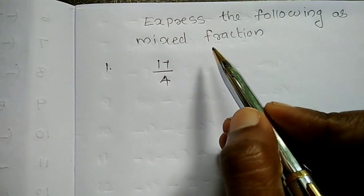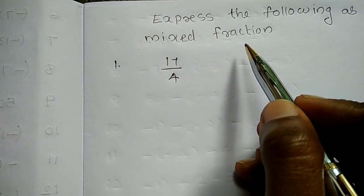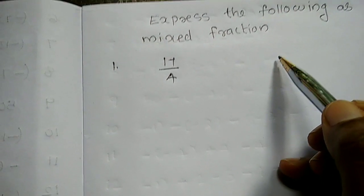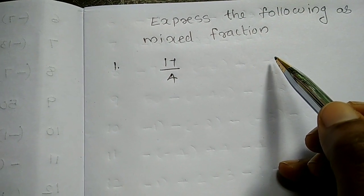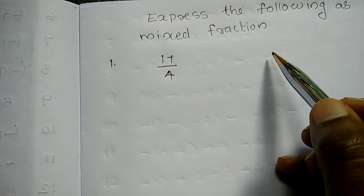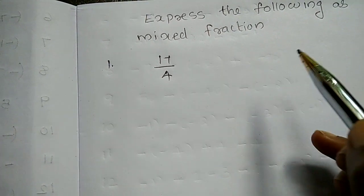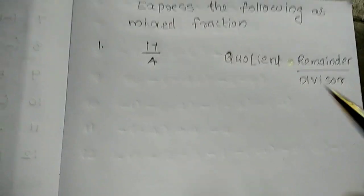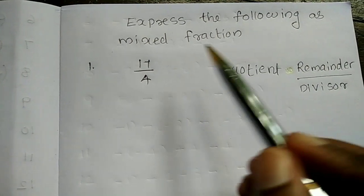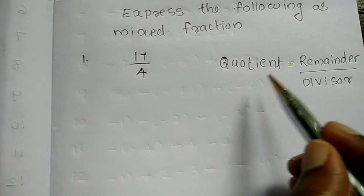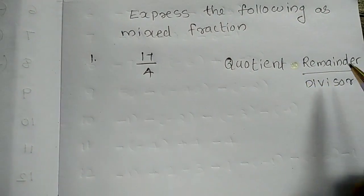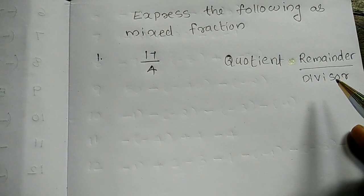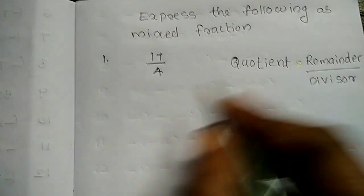We can express an improper fraction as a mixed fraction by dividing the numerator by the denominator to obtain the quotient and the remainder. The mixed fraction is written as: quotient, then remainder over divisor.